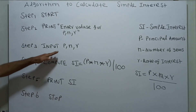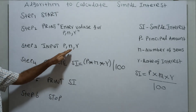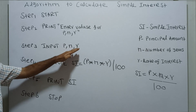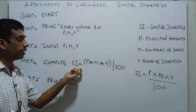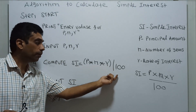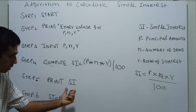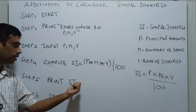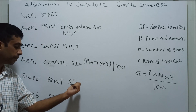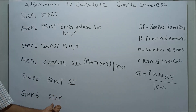To summarize: obtain input P, N and R — principal amount, number of years, and rate of interest. Compute simple interest equal to P, N, R divided by 100. Then print the result — print SI — and simple interest will get printed. This is the end of the algorithm.